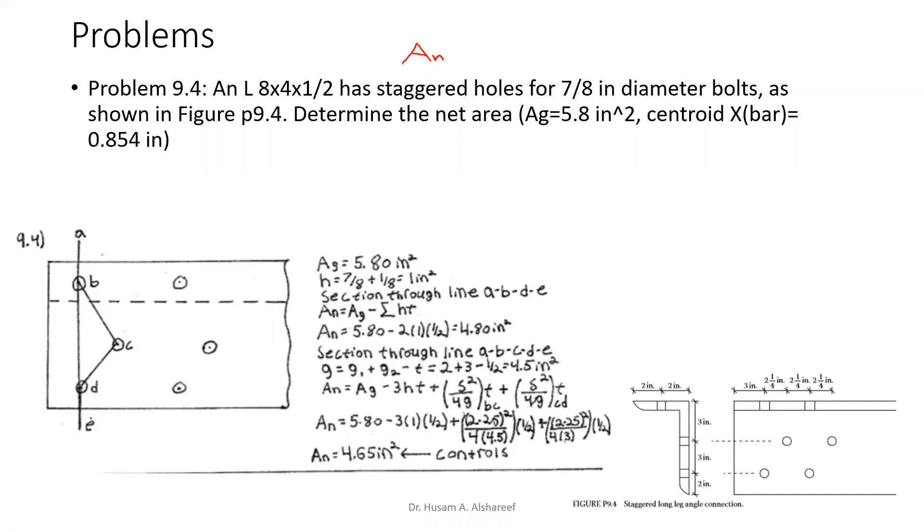And of course, the smaller should control. So going through section ABDE, which is vertical, it's going to equal the gross area minus the hole size times the thickness. So the gross area is 5.8 minus two holes, so it's 2 times 1 inch times 0.5, and this gives me 4.80 in². That's the first scenario.